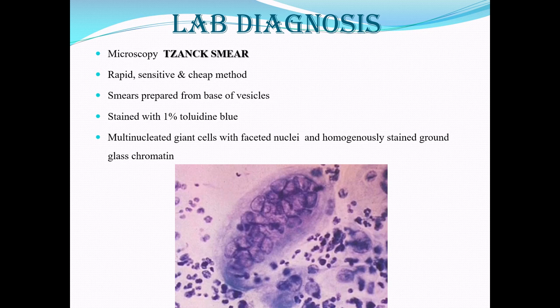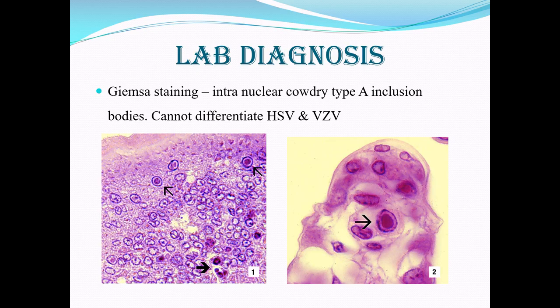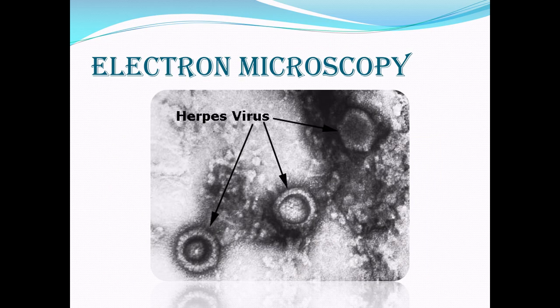First, you have microscopy using the Tzanck smear — a rapid, sensitive, and cheap method. You take material from the base of the vesicles and stain it with 1% toluidine blue. You will see multinucleated giant cells with faceted nuclei, and the background will be stained with a ground-glass appearance. You can also do Giemsa staining to look for Cowdry type A inclusion bodies, but the problem is these inclusion bodies cannot differentiate between the different types of alpha viruses — for example, chickenpox versus herpes simplex virus.